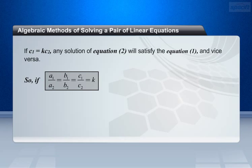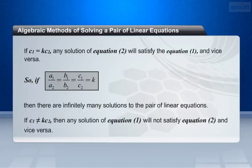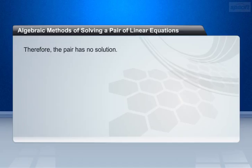So if a1 by a2 equals b1 by b2 equals c1 by c2 equals k, then there are infinitely many solutions to the pair of linear equations. If c1 is not equal to k c2, then any solution of equation 1 will not satisfy equation 2, and vice versa. Therefore, the pair has no solution.